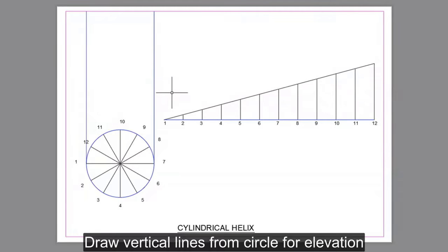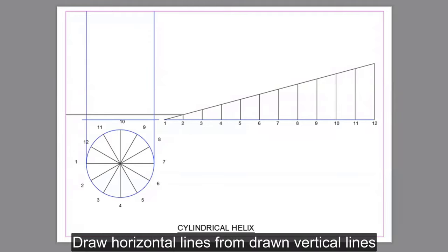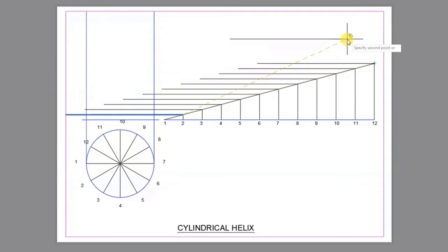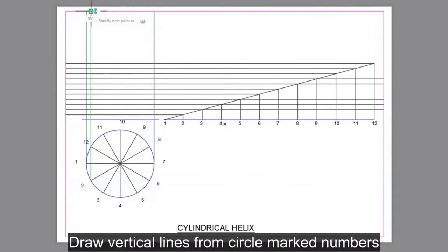Draw vertical lines from circle for elevation of cylinder. Draw horizontal lines from drawn vertical lines. Draw vertical lines from circle marked numbers.